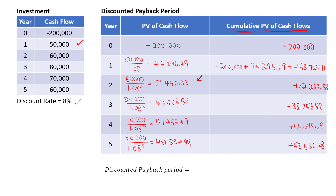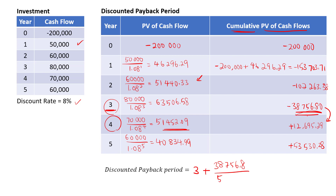The discounted payback period is the period where the cumulative PV changes from negative to positive — again, between year three and year four. So we take three years plus the remaining amount to recover, $38,756.80, divided by the present value of cash flows in year four, $51,452.09. That equals 3.75 years. This is longer than the payback period of 3.14 years computed earlier.